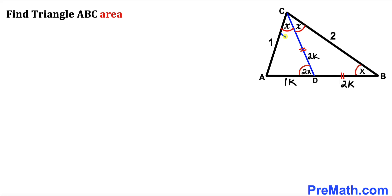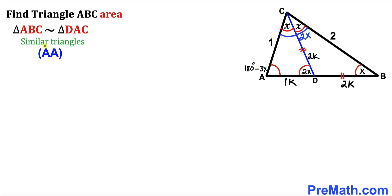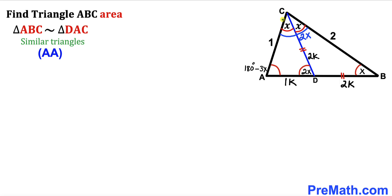We can see that the whole angle ACB is x plus x, making it 2x. By the triangle sum theorem, the sum of three interior angles is always 180 degrees. Focusing on triangle ABC: one angle is x, the whole angle ACB is 2x, so the remaining angle must be 180 degrees minus 3x. Therefore, triangle ABC is similar to triangle DAC by the angle-angle similarity theorem.